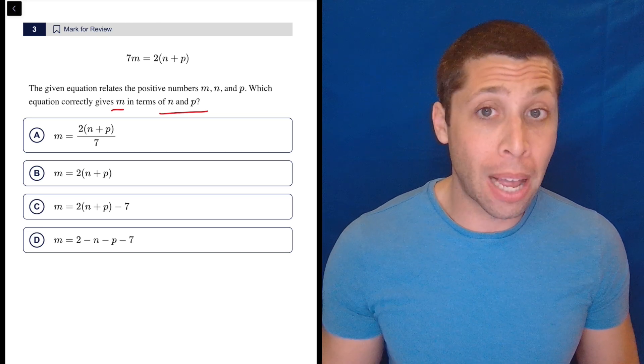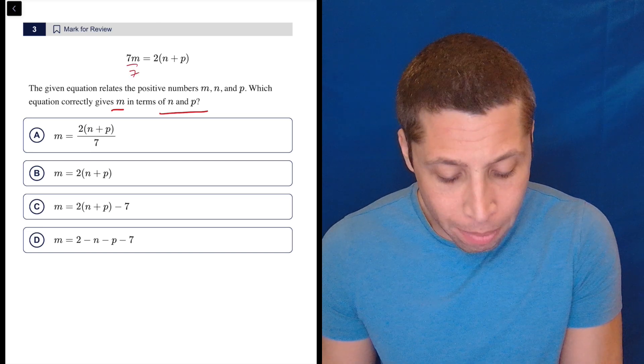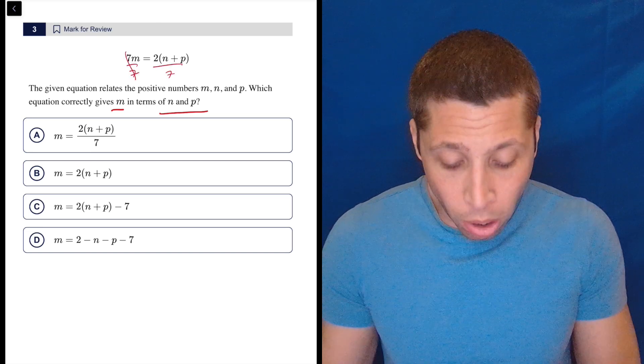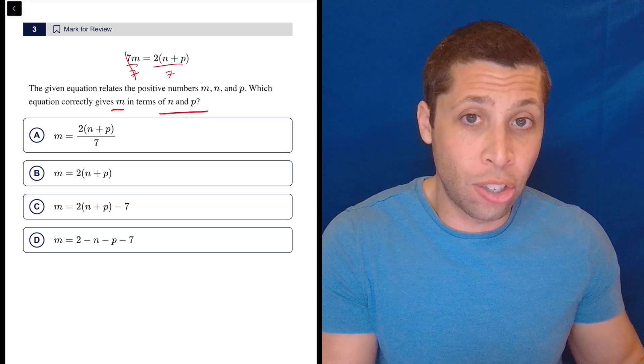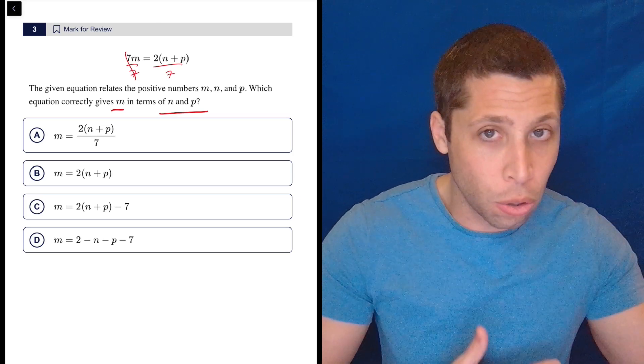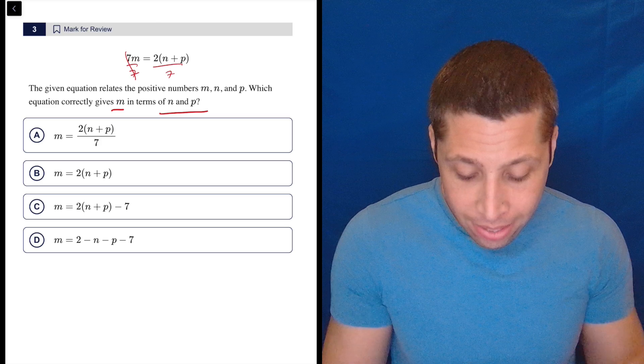M is currently multiplied by seven. So you want to just divide by seven and that'll cross out the sevens there, but there's nothing that can change on the right. The seven is not going to divide into the two or the N or the P. So that's it.